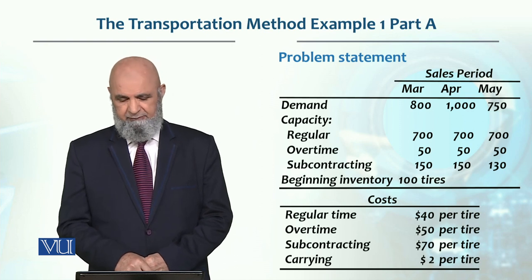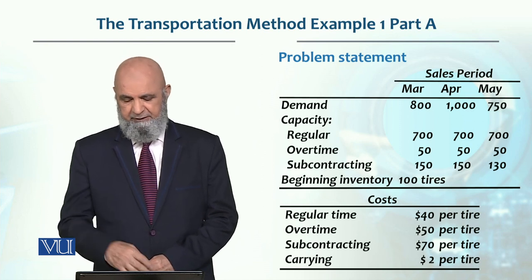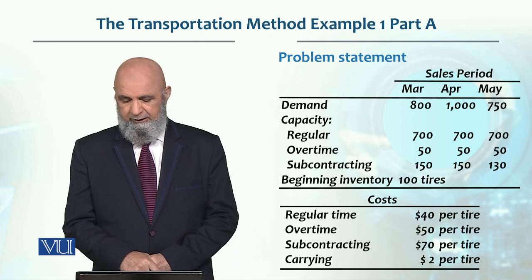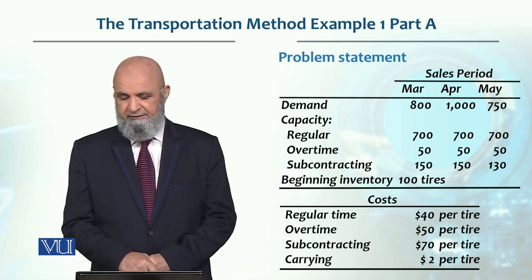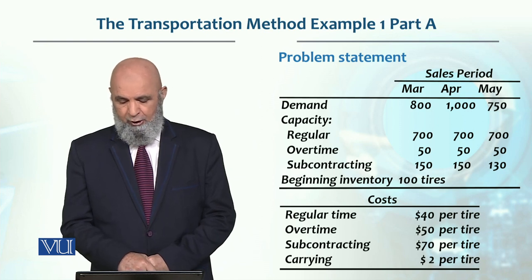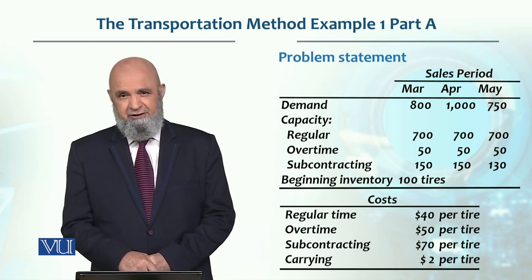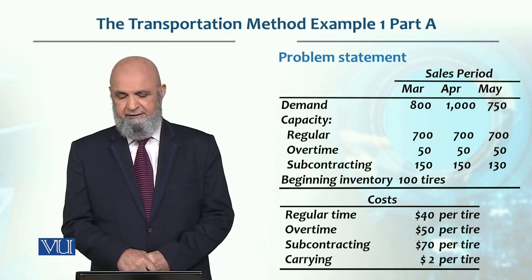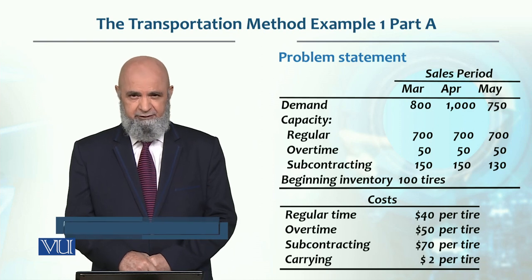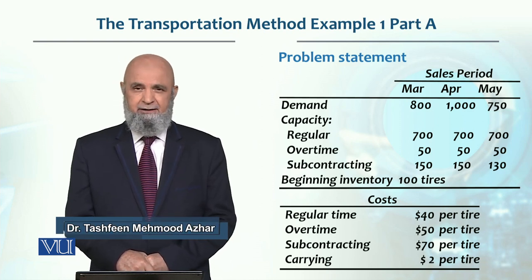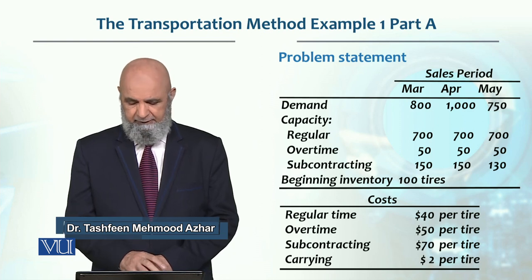The capacity available with respect to different options: regular time production is 700 units each month, overtime is 50 units each month, and subcontracting for the first two months we have 150 units available, and in May, 130 units.